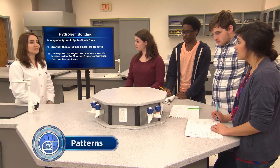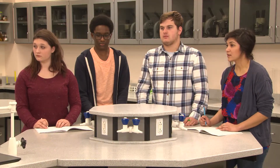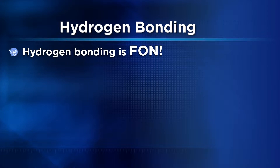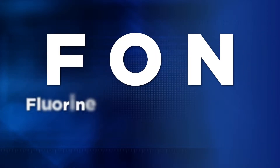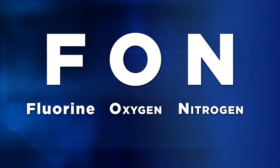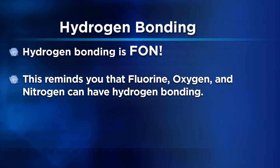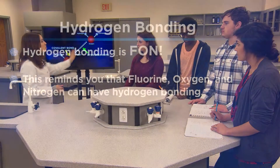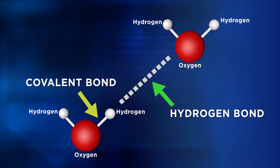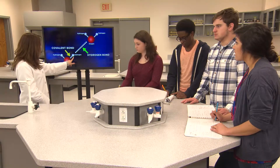There's a way to memorize the types of molecules that will have hydrogen bonding. If you say 'hydrogen bonding is fun,' it will remind you that hydrogen bonding occurs in molecules that have hydrogen bound to fluorine, oxygen, or nitrogen. A common mistake students make is thinking that a hydrogen bond is a covalent bond between hydrogen and fluorine, oxygen, or nitrogen. In reality, a hydrogen bond is just another type of intermolecular force - a force that acts between molecules. Water molecules have hydrogen bonding between them, not within them.